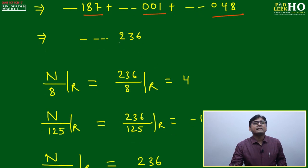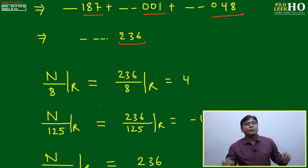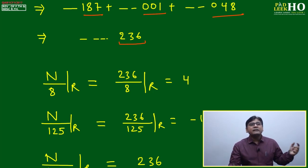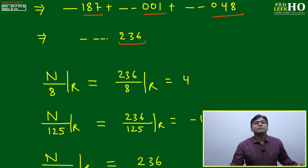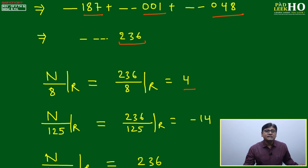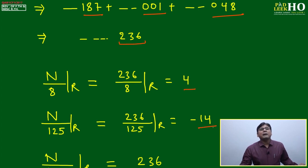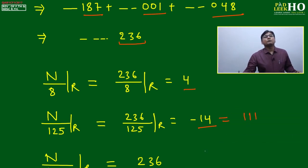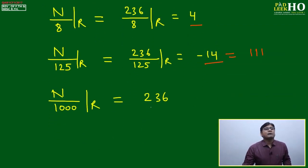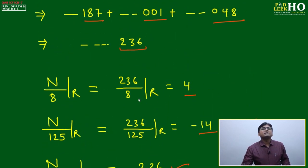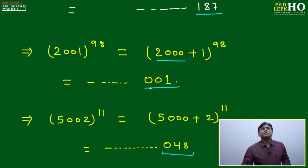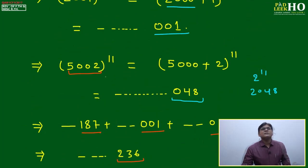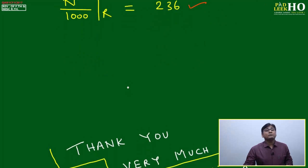Adding the last three digits: 187 + 001 + 048 = 236. So the last three digits of n are 236. Now: (a) 236 ÷ 8 gives remainder 4. (b) 236 ÷ 125 gives remainder -14, or in positive form: -14 + 125 = 111. (c) 236 ÷ 1000 gives remainder 236 directly.